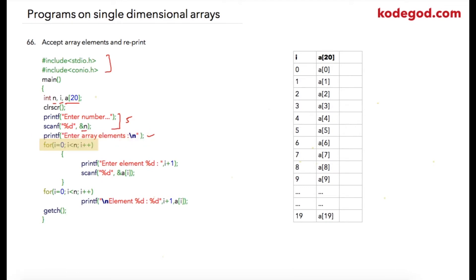As we know, the array starts from 0, so my loop is from 0 till n. If I have entered 5, this loop will be from 0 till 4 because of the condition 'i less than 5'. Inside the for loop, I am printing 'enter element %d' and replacing %d with 'i plus 1', so in the first iteration when i equals 0, it will print 'enter element 1'.